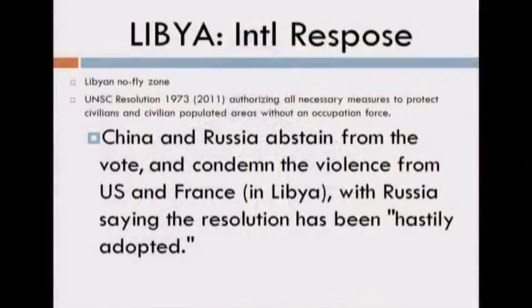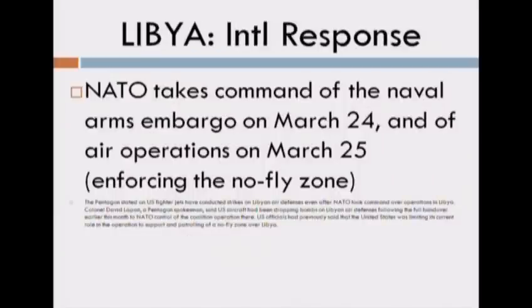Resolution 1973 authorizes member states to take all necessary measures to protect civilians and civilian populated areas under threat of attack in Libya, including Benghazi, while excluding an occupation force. It also reinforces all items from the previous resolution — arms embargo, ICC referral, assets freeze. This means the international community has responded. China and Russia abstain — they could have stopped this with their veto but didn't vote no. Russia argues the resolution was hastily adopted. NATO takes command of the arms embargo in late March and the air operations the following day, enforcing the no-fly zone.